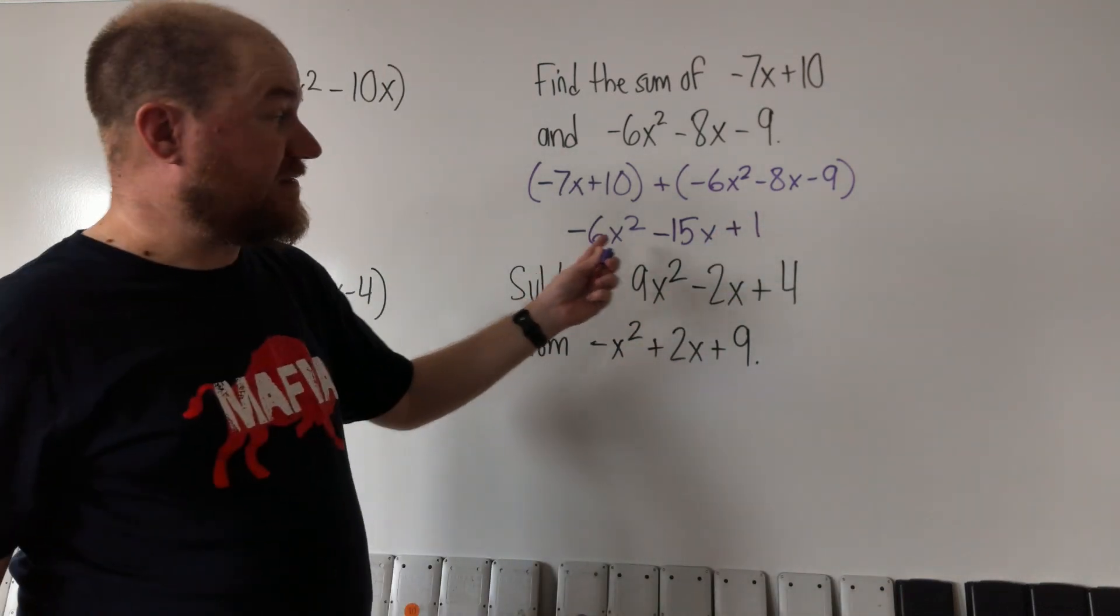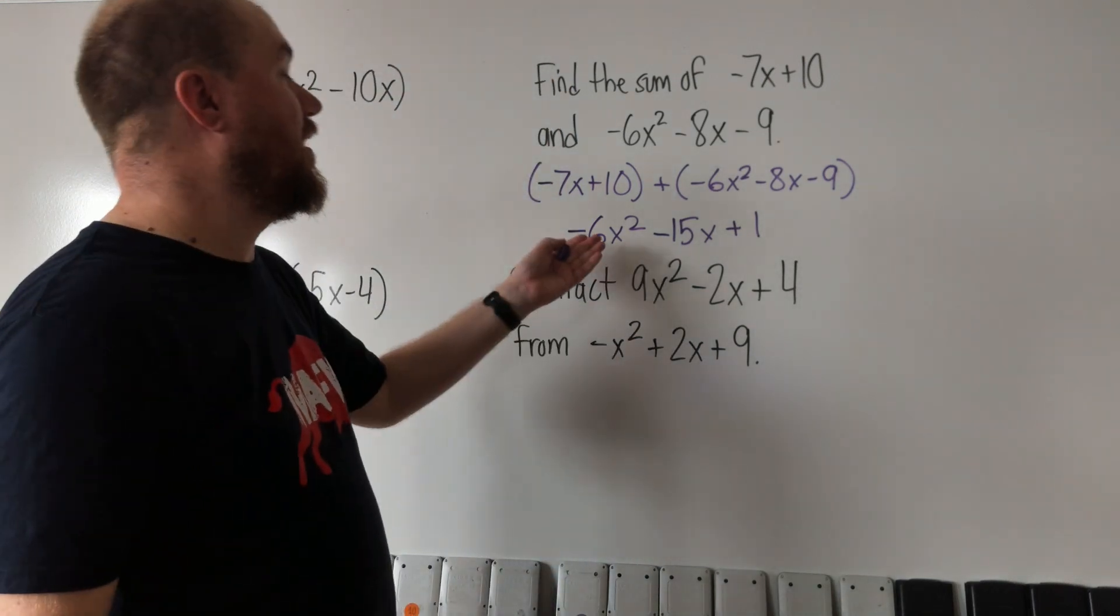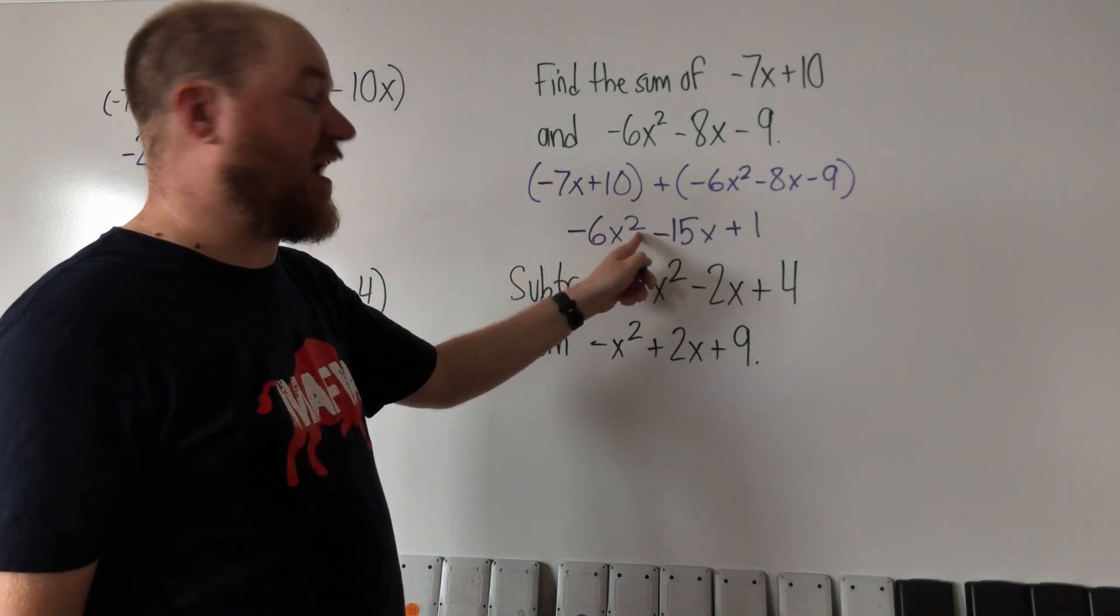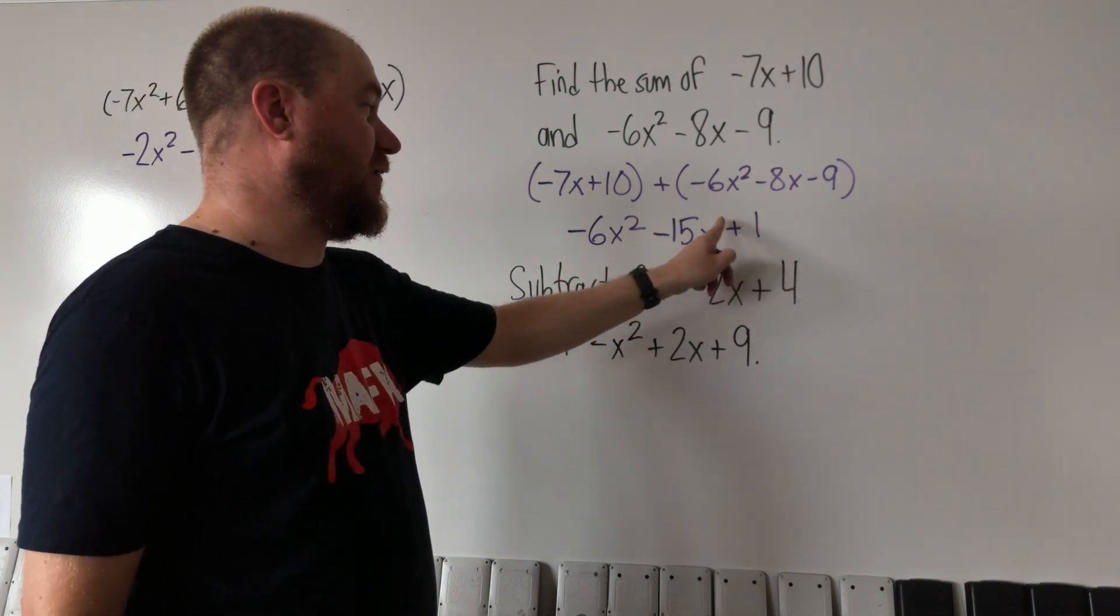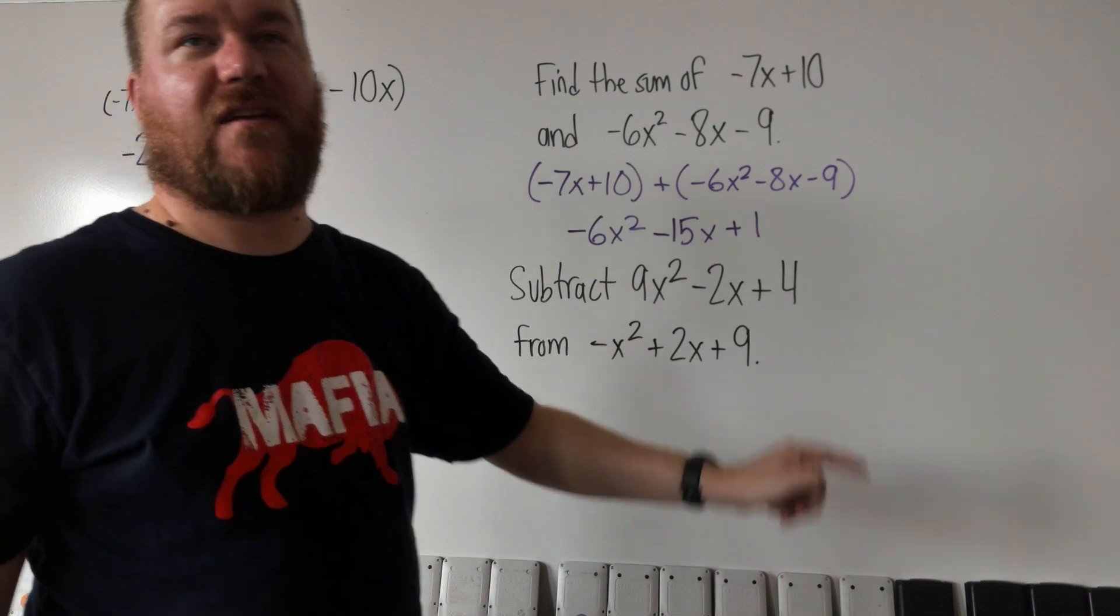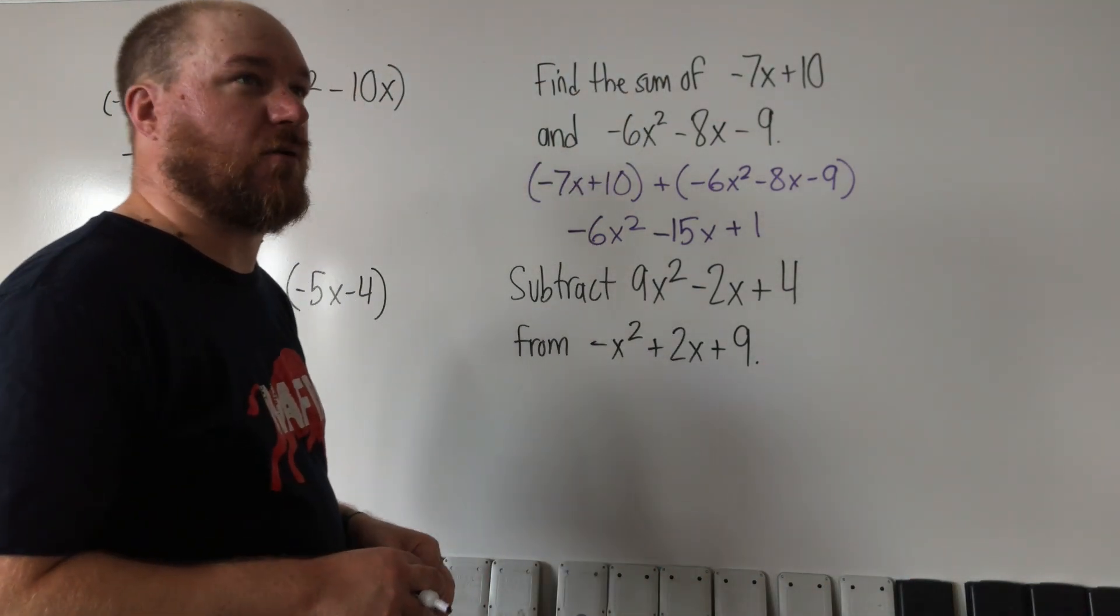If you have an answer that's in a different order than that, that's correct. It's just math people prefer that you sort the exponents from highest value, in this case 2, down to lowest value. This one has an exponent of 1, and that one doesn't have an exponent at all. So we have it sorted from highest exponent to lowest.